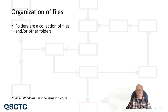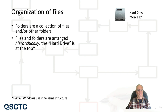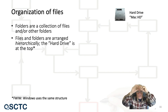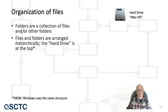Let's look at the organization of files on your computer. Files are organized through folders, and folders are a collection of files and/or other folders. They're arranged hierarchically — like an upside-down tree where the root is at the top. That root is your hard drive.